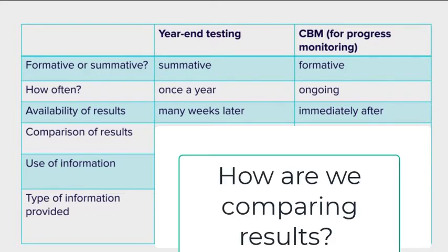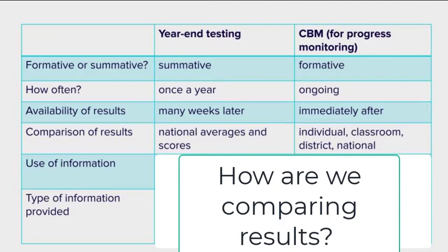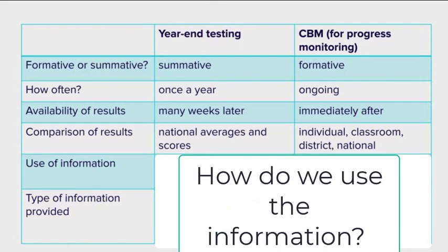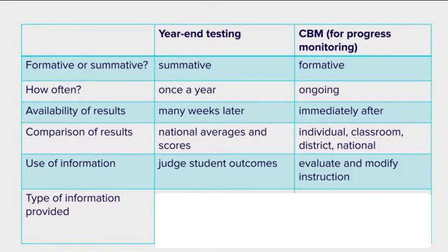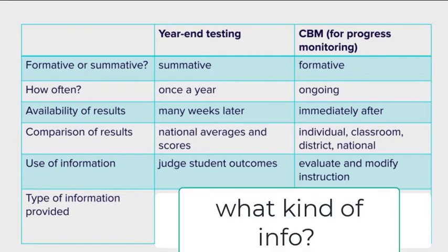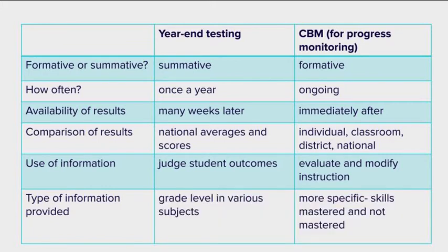When comparing results, year-end testing looks at national averages and scores. But CBM gives us the opportunity to compare individual to individual progress — across a classroom, across a district, or against a national norm. In terms of usefulness, year-end testing judges student outcomes, but CBM allows us to evaluate and modify our instruction based on the information we get. For the type of information provided, year-end testing looks at grade level in various subjects, while CBM can be more specific — we can look at exactly which skills have been mastered and not mastered.